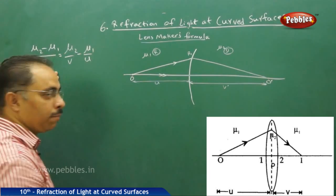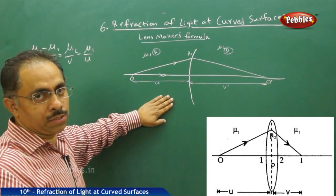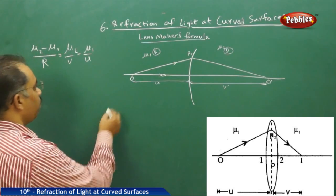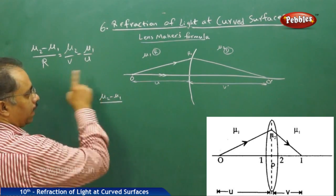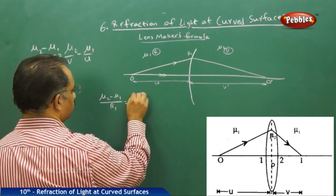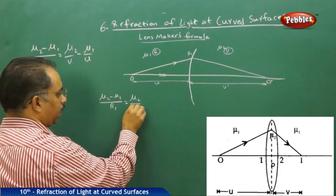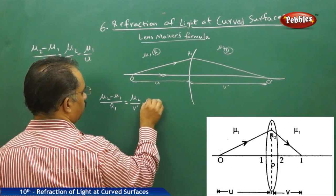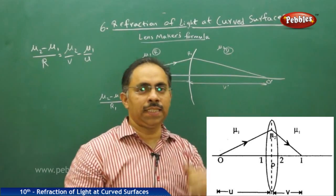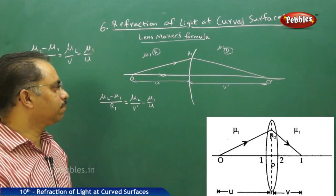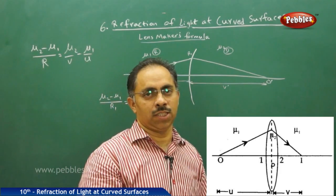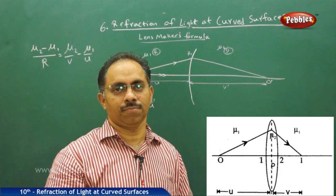Applying the refraction formula for spherical surfaces to this situation: (mu2 - mu1) / r1 = mu2 / v_dash - mu1 / u. The image O dash is the image of the point object O, and this image is formed in the denser medium. We will not be able to see that image, so this image is a virtual image — it cannot be caught on a screen.